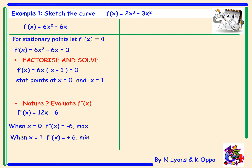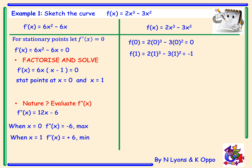Next we need to get our y-coordinates. Going back to our original function f(x) = 2x³ - 3x², when x = 0 we get a y-coordinate of 0. When x = 1, we have 2(1³) - 3(1²), which gives a y-coordinate of -1. Therefore we have a maximum turning point at (0, 0) and a minimum turning point at (1, -1).